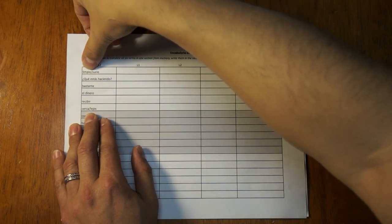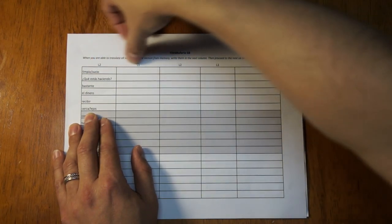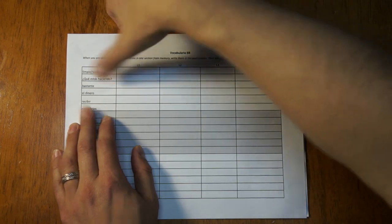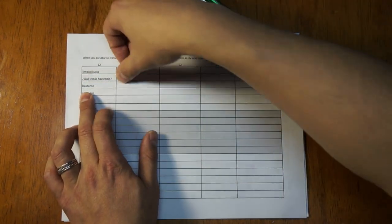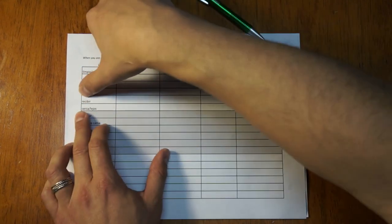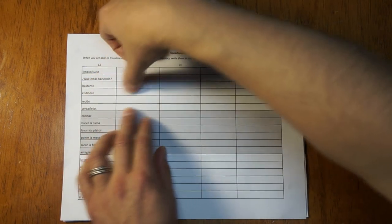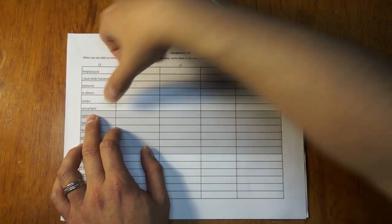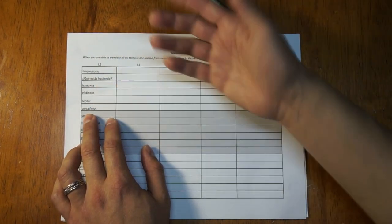So they would start like this. Limpio, sucio, is clean and dirty. ¿Qué estás haciendo? What are you doing? Bastante, let's pretend I forgot this word. I don't remember. Is it coffee? El dinero, I know that's money. Recibir, is to receive. It looks like to receive a little bit. And then cerca and lejos, I don't remember. Is it tall short?